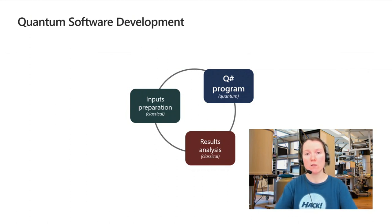So classical software can do things like input preparation for the quantum program and analyzing its result. And the quantum program is going to solve that one part of the problem that is perfectly suited for getting quantum speed up.